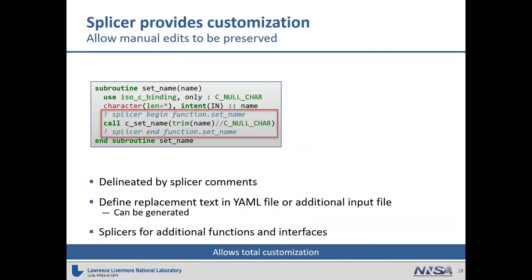One big issue with wrapped code is it doesn't always do exactly what you want and you can't easily edit it. I borrowed an idea from another wrapping tool that creates splicer codes delineated by comments. You can change exactly what goes in there if you don't like what was generated. You can put those in the YAML file or an additional file. This allows you to update the generated wrappers.